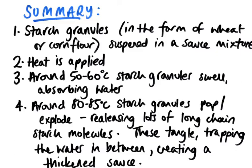Around 50 to 60 degrees, the starch granules swell up, absorbing the water — you'll see them looking bigger and much plumper at this stage. Then at around 80 to 85 degrees, this is where gelatinisation actually occurs and the starch granules pop or explode. Those starch molecules are released and they tangle up in the sauce, trapping the water in between. This creates a thickened sauce.